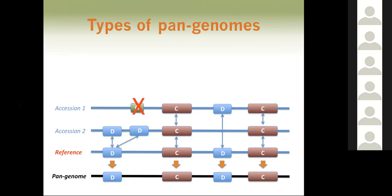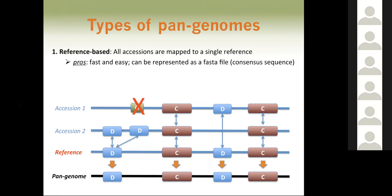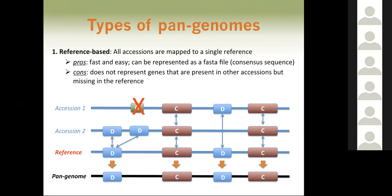The most common and easiest type is a reference-based pan genome, where all accessions are mapped to a single reference. These are fast and easy to make and can be represented as a FASTA consensus sequence. The downside is they do not represent genes present in other accessions but missing in the reference. For instance, if you have accession one, accession two, and the reference, the dispensable and core genes mostly have a representative in the reference, but an orphan gene does not — it would not be represented in that pan genome.